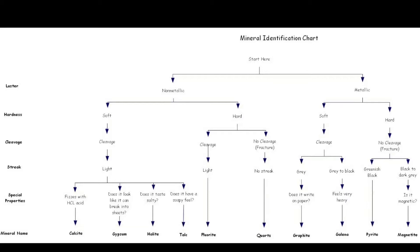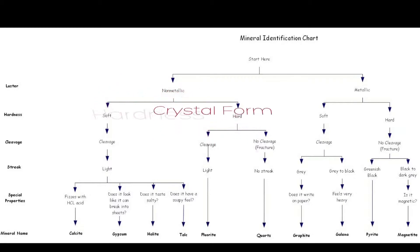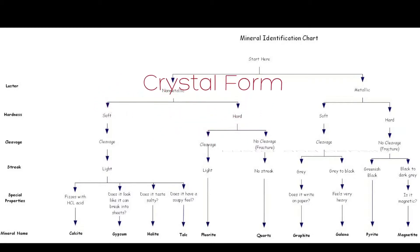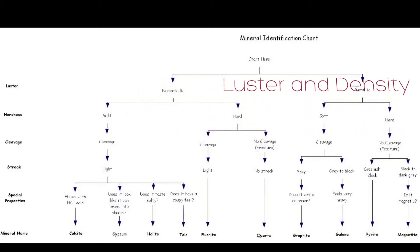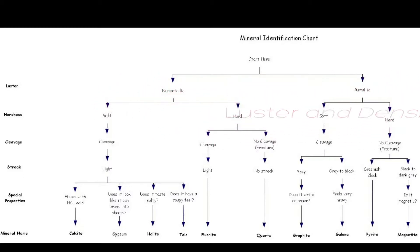Geologists use the properties of minerals — such as color, hardness, crystal form, luster, and density — to classify them into different types of minerals. These differences set them apart when they are formed.